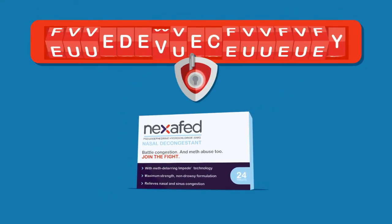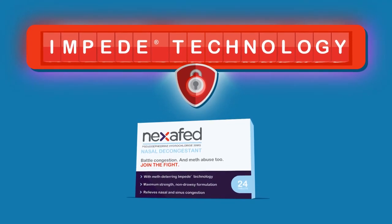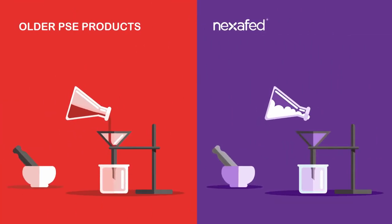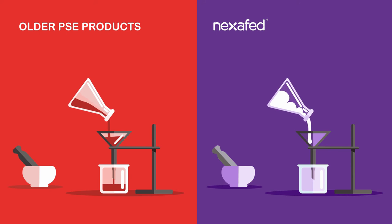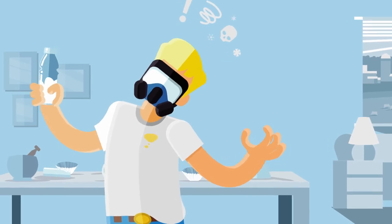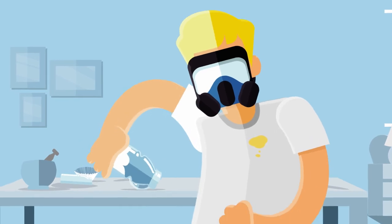Nexafed uses meth-resistant MP technology to disrupt the extraction and conversion of Sudafedrin to methamphetamine. If a meth cook tries to dissolve Nexafed to extract Sudafedrin, these inactive ingredients form a thick gel to block the extraction. MP technology also disrupts the conversion of Sudafedrin to meth in the dangerous one-pot or shake-and-bake method.